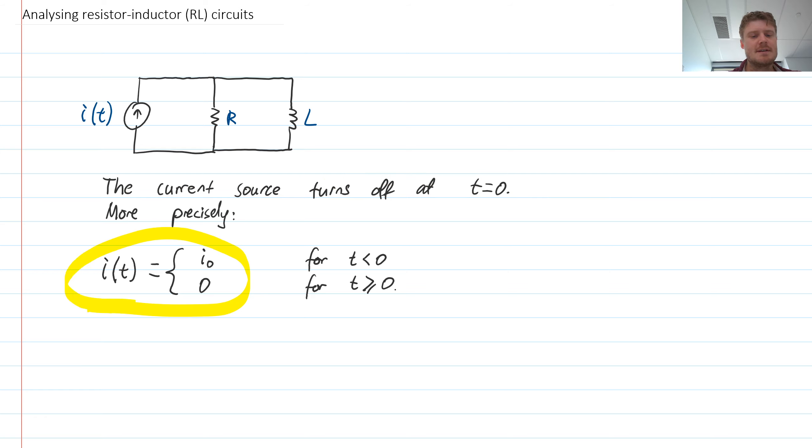So writing that kind of precisely, we have that there's an initial current i0 which is generated for times less than 0, and then it turns off, basically goes to 0 for positive values of time.